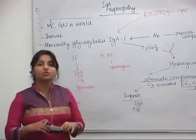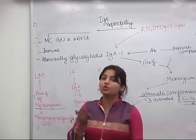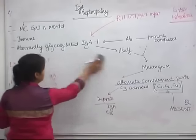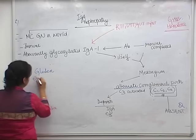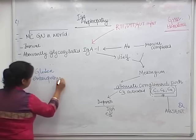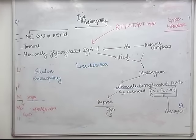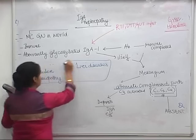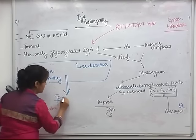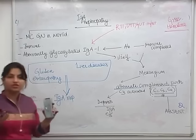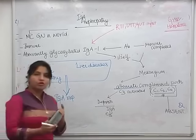There are two types of IgA nephropathy: primary and secondary. In diseases like gluten enteropathy, there is more production of IgA. In patients with liver disease, they cannot remove aberrantly glycosylated IgA1. These two groups of patients are prone to develop secondary IgA nephropathy. IgA nephropathy is the most common cause of glomerulonephritis and one of the most common causes of gross hematuria.